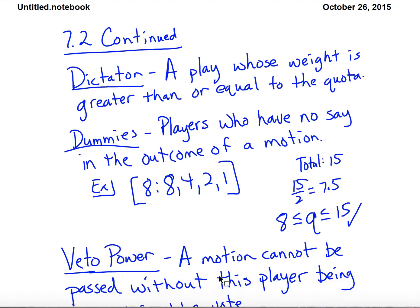Another concept is a dictator. A dictator is any player whose weight is greater than or equal to the quota — meaning that player has enough votes to pass something without anybody else. If the quota is 5 and the dictator has 7 votes, they can make anything pass without anyone else voting for it. Even if everybody else is against it, that person can make it happen.